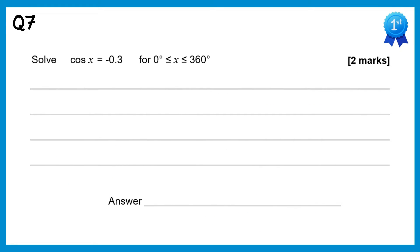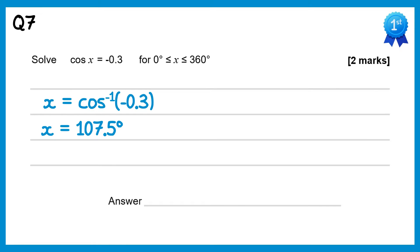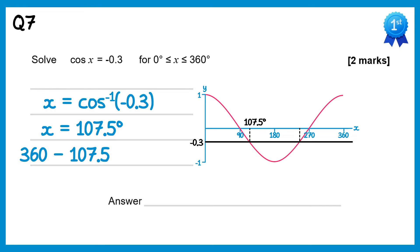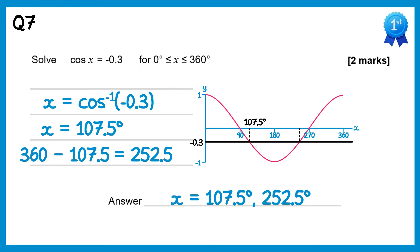For this question we do inverse cos of negative 0.3, which gives 107.5 degrees. We look at the graph and draw a line at negative 0.3. There are two solutions — we already have the left one at 107.5. Using the symmetry: 360 take away 107.5 is 252.5. So there are two solutions: 107.5 and 252.5.